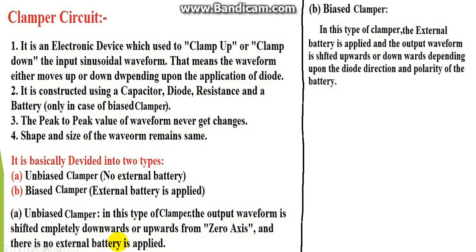The biased clamper is the type of clamper where the external battery is applied. In this type of clamper, the external battery is applied and the output waveform is shifted either upwards or downwards depending on the direction of the diode and polarity of the battery.